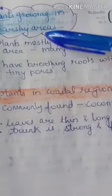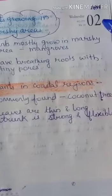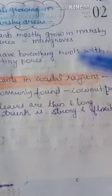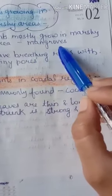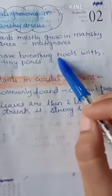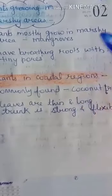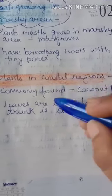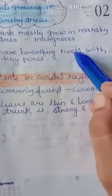Plants growing in marshy areas — marshy areas are water-logged areas. The plants that mostly grow there are mangroves. Mangroves have breathing roots with tiny pores. Kyunki wo water-logged area mein hain, saans lene ke liye unke roots soil se thode bahar aa jate hain — those are known as breathing roots.